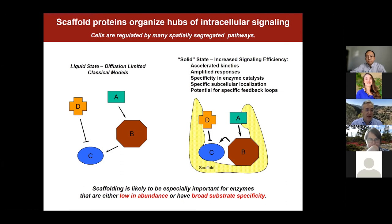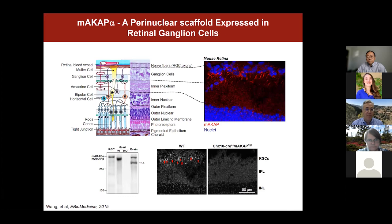Scaffolding is especially important for enzymes that are low in abundance or have broad substrate specificities, yet have specific critical functions within the cell. The scaffold my lab is particularly interested in is called MAKA-cap alpha — a perinuclear scaffold that is expressed primarily in the retinal ganglion cells of the retina. It's a large molecule with specificity for these particular neuronal cells.